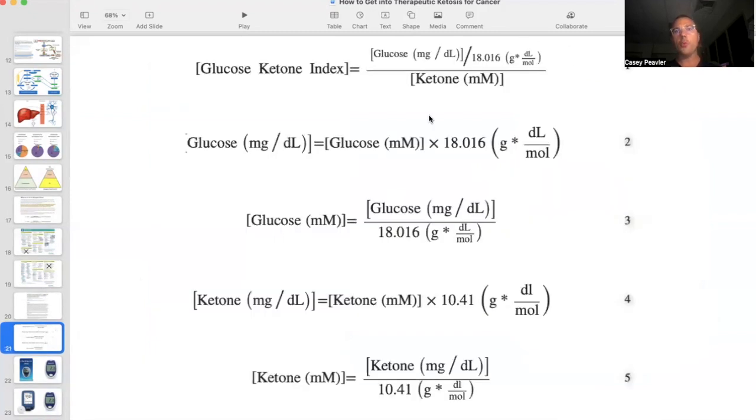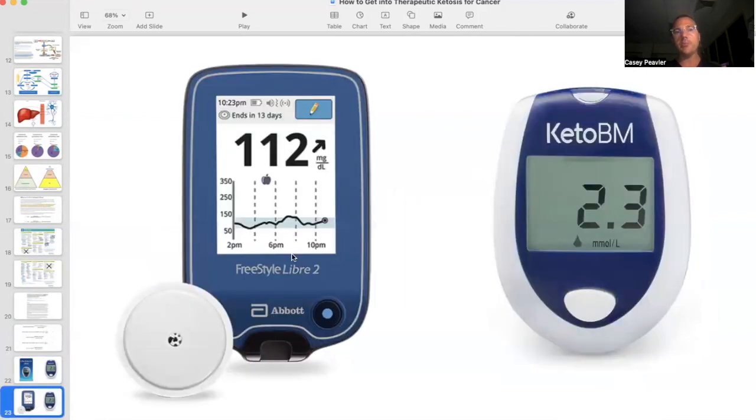You have to put it in this formula to calculate your GKI. The other way you could do it is if you had a Freestyle Libre 2 here or a continuous blood glucose monitor where you don't have to stick yourself every time and you have continuous monitoring of your glucose levels, which is pretty cool. I think especially if I was a cancer patient, I think this would be especially useful to have access to my glucose levels to know if I'm in the level that I want to be at.